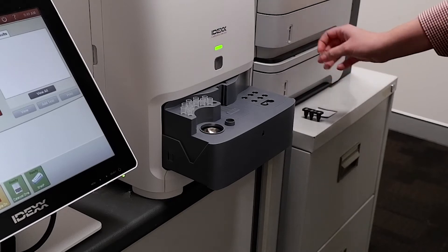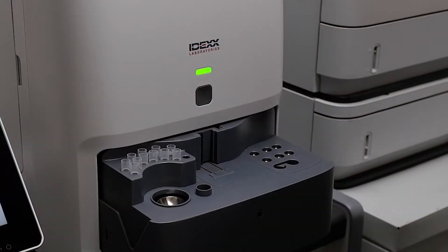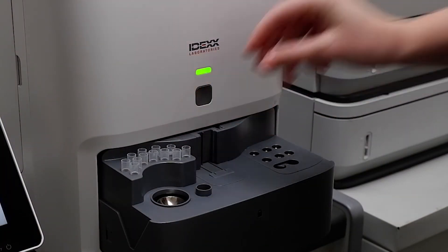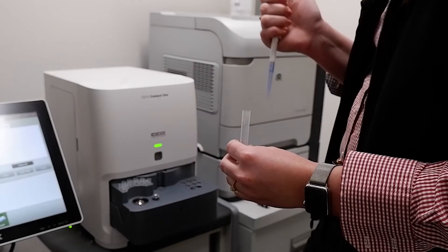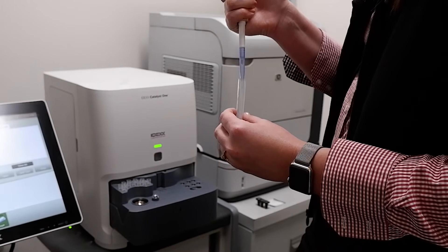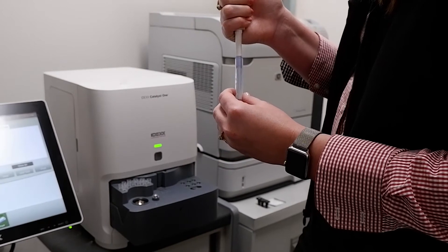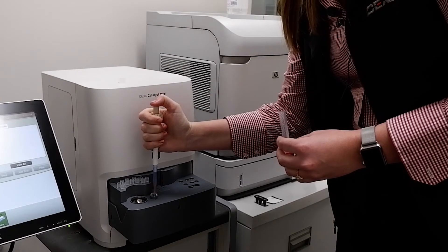When loading the catalyst bile acids into the sample drawer, ensure all pipette tips are full. Fill the sample cup with 300 units of serum or plasma using your IDEX pipette. Ensure there are no air bubbles in the sample cup.